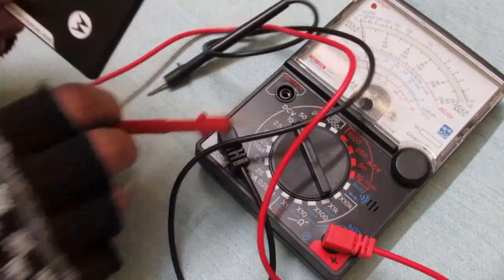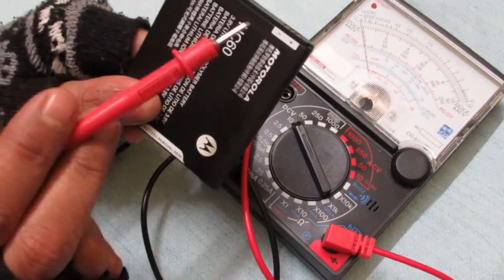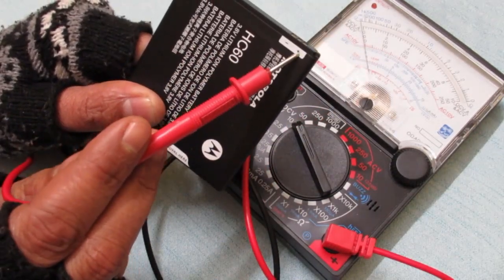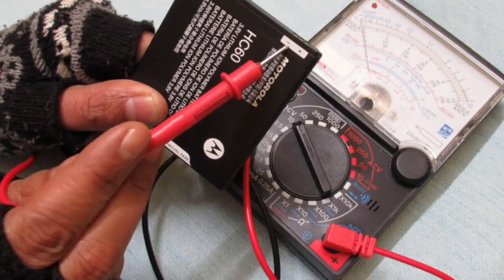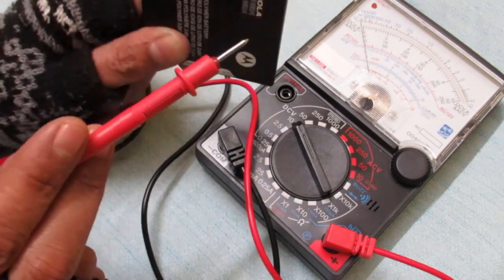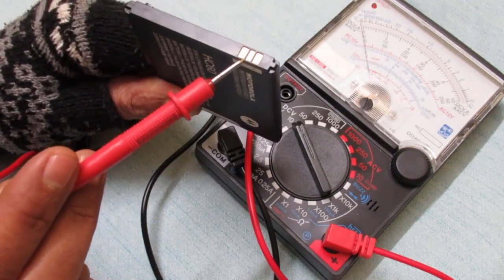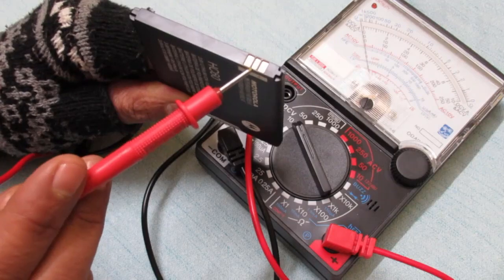Now I'm going to check a lithium-ion mobile battery. As you can see, this battery has three terminals. One is positive, one is negative, and in the middle is BSI or battery temp.